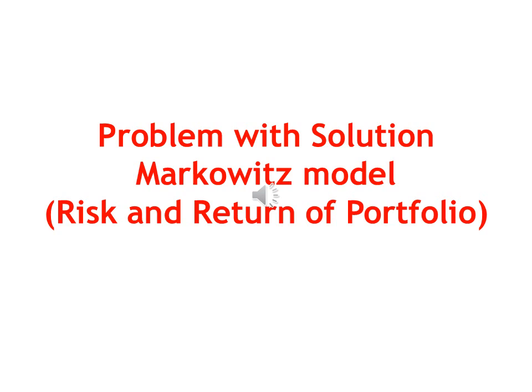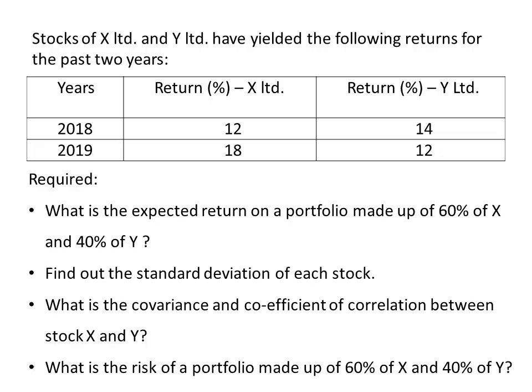Let's work out a problem on return-risk calculation using the Markowitz model. Stocks of X Limited and Y Limited have yielded the following returns for the past two years. Stock X gave a return of 12% in 2018 and 18% in 2019. Stock Y gave a return of 14% in 2018 and 12% in 2019. We are required to: (1) calculate the expected return on a portfolio made up of 60% X and 40% Y, (2) find the standard deviation of each stock, (3) find the covariance and coefficient of correlation between X and Y, and (4) find the risk of the portfolio made up of 60% X and 40% Y.